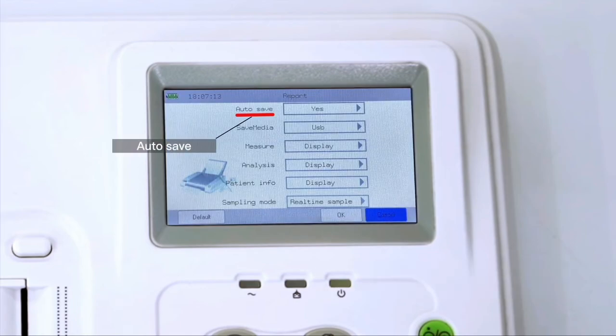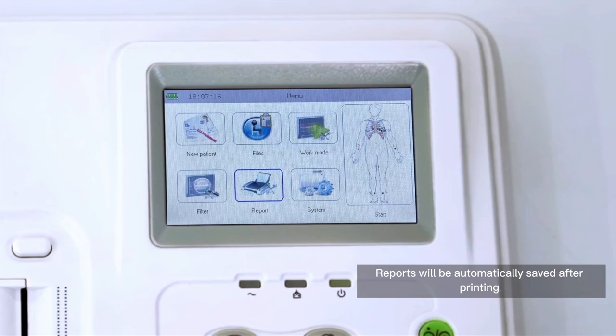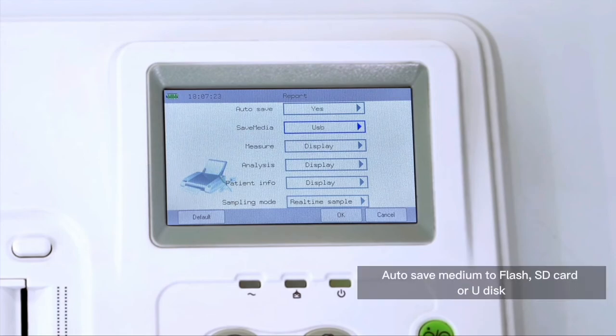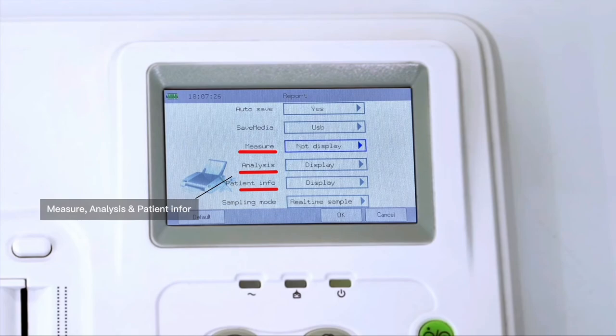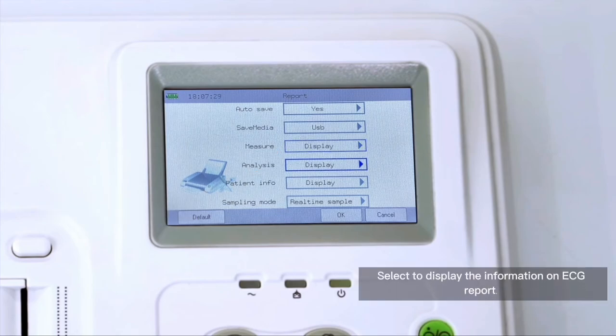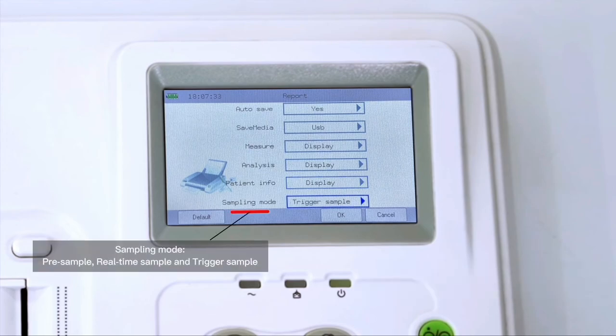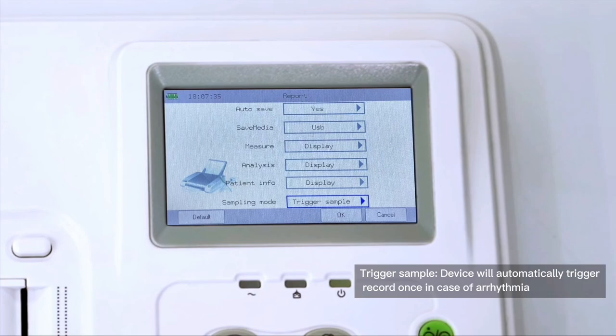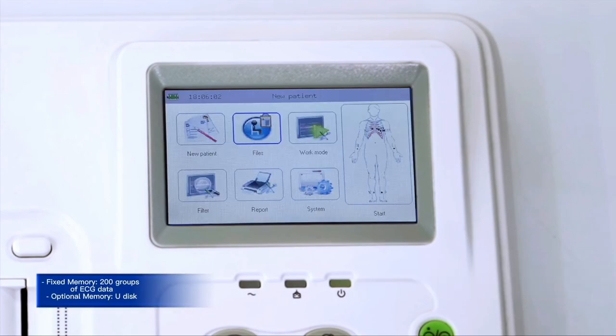Select auto save feature - ECG reports will be automatically saved to the device memory after printing. Select default medium according to actual needs like flash drive, SD card, or USB disk. Also, measure analysis and patient info can be selected to be displayed on the report. It also has pre-sample, real-time sample, and trigger sample mode. When pre-sample is selected, collection of ECG data begins as soon as lead is connected to patient. When real-time sample is selected and the user presses record button, record of the ECG data collected within 10 seconds after pressing this key will be exported. When trigger sample is selected, the device will automatically trigger record once in case of arrhythmia.